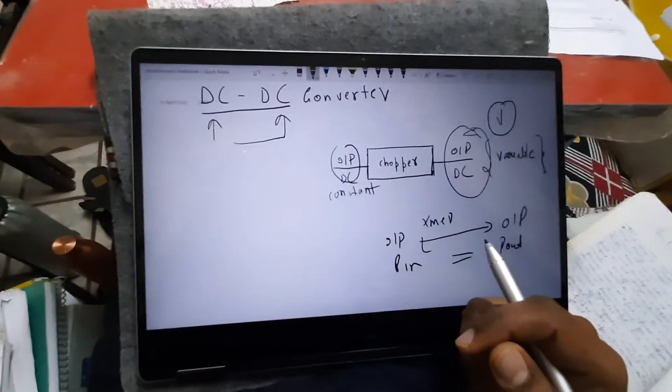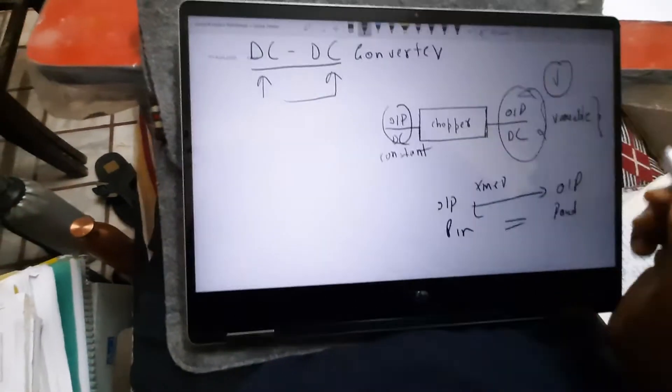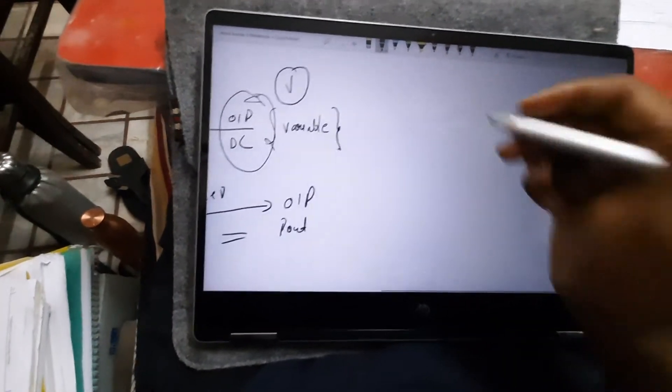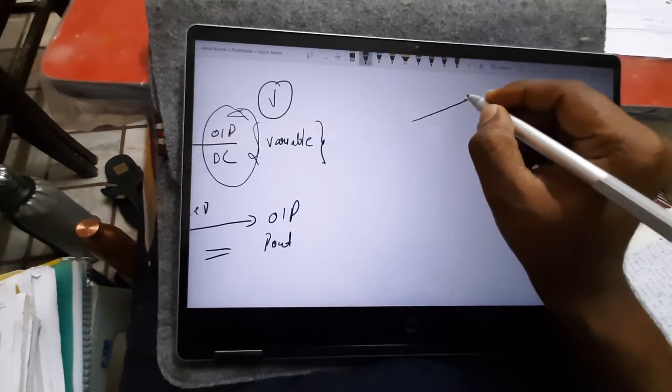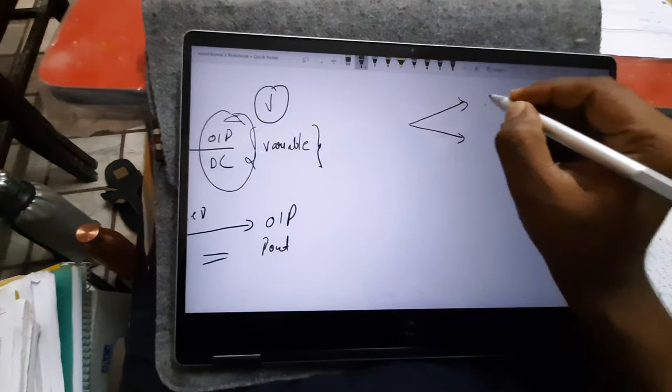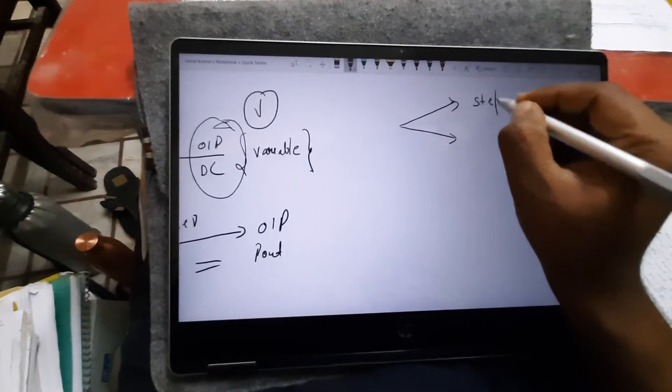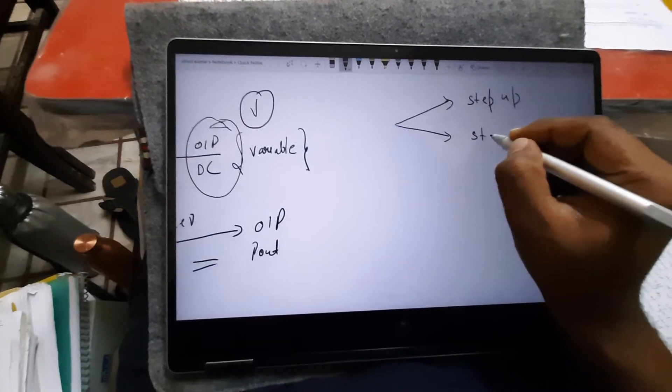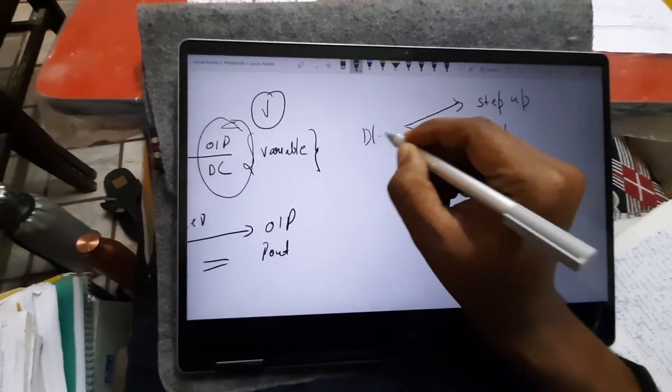So the choppers can be characterized into two modes or two categories: that is either it will be a step up chopper or step down chopper.